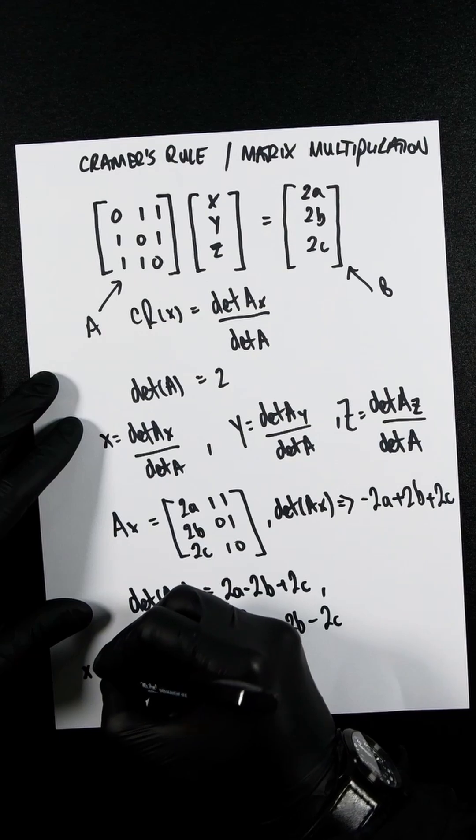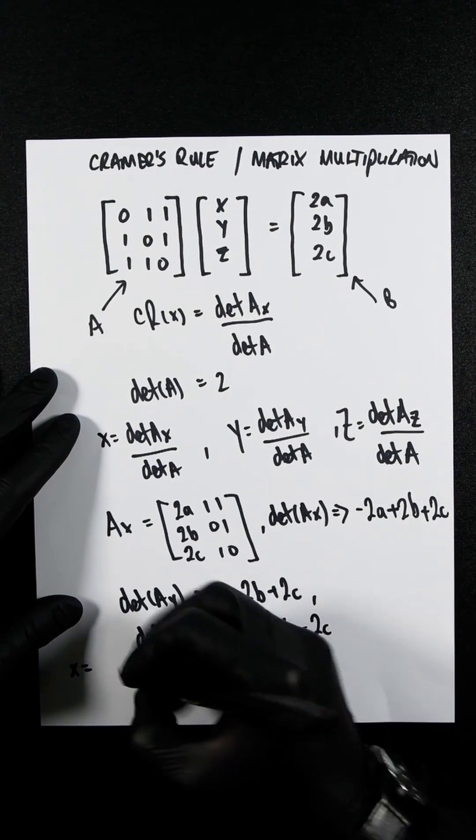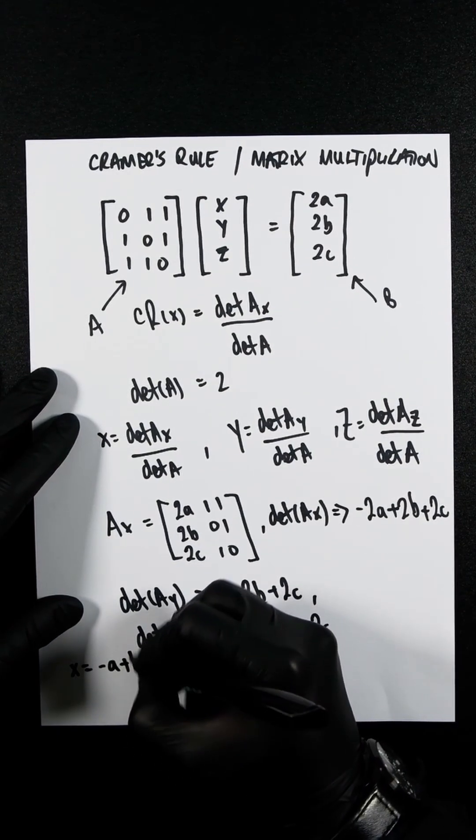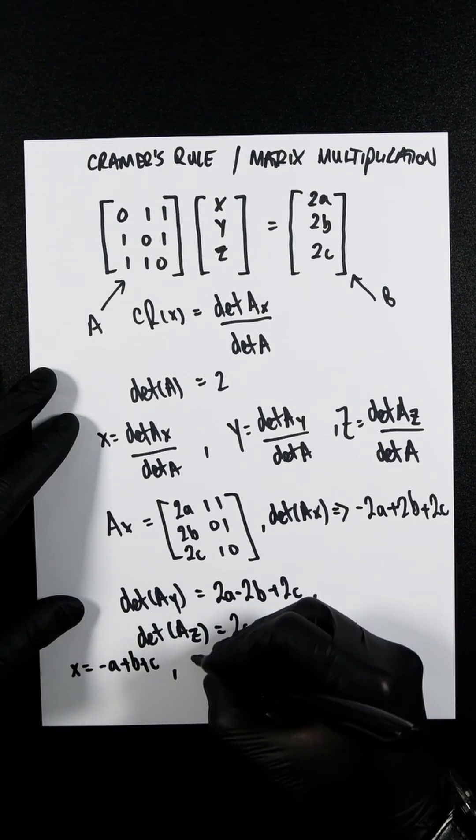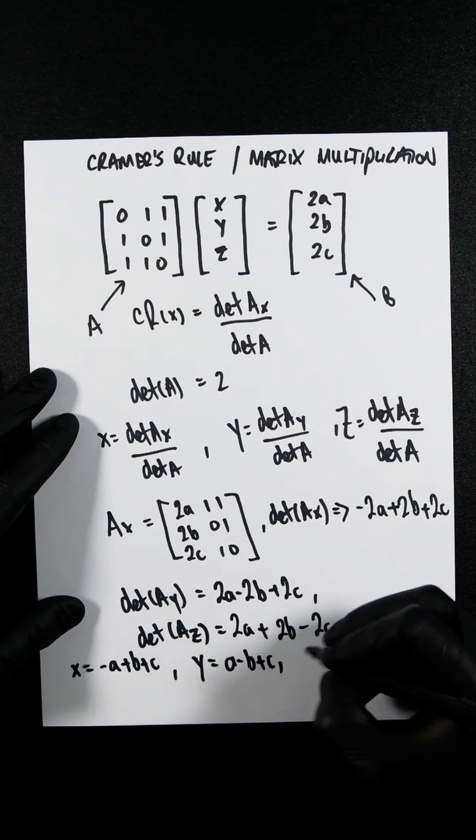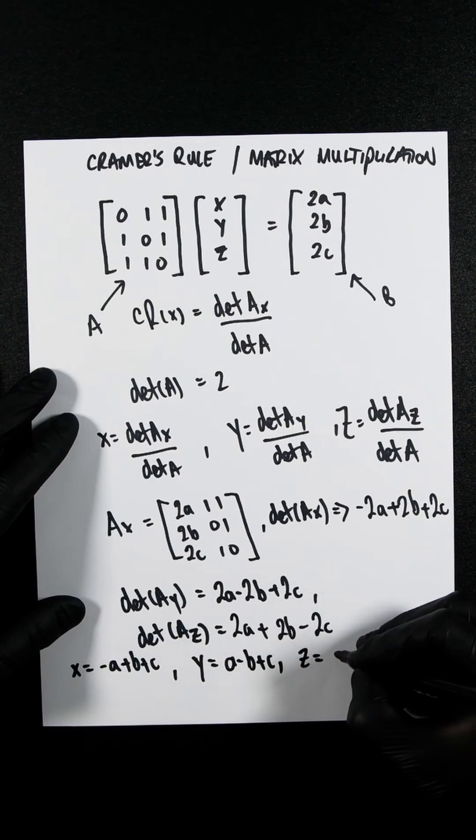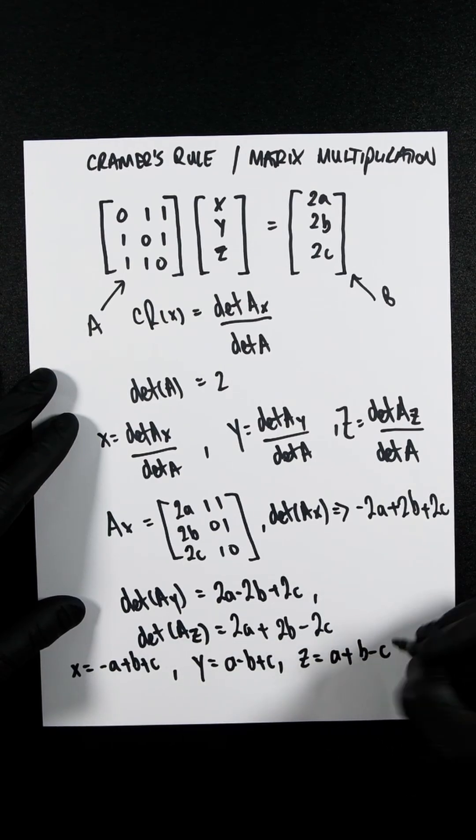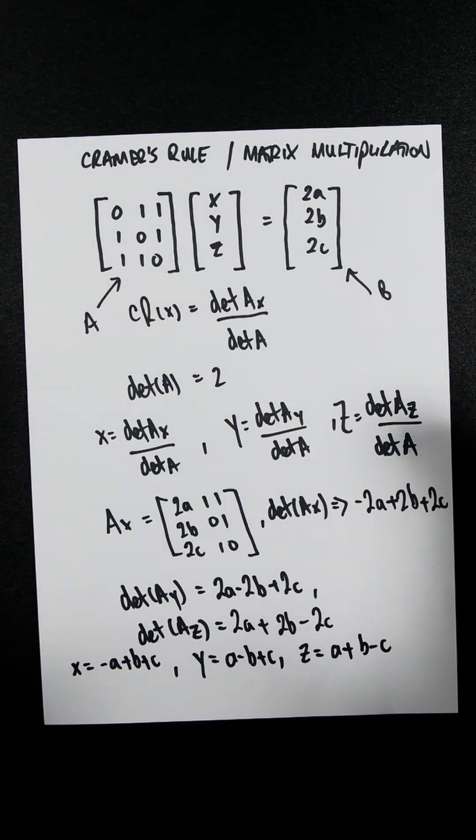So therefore, we're going to have x equals minus A plus B plus C. Y would equal A minus B plus C, and z would equal A plus B minus C.